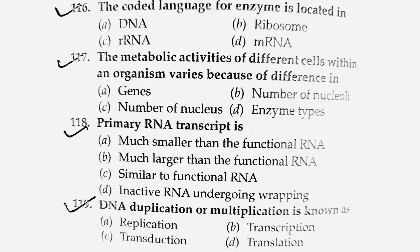Next question: DNA multiplication is known as what? Duplication means copy; in biology, multiplication means division — the parent divides into daughter cells. Replication means complementary copying. The process: DNA makes its own copy through replication. Then transcription is DNA to RNA (mRNA formation), and translation is mRNA to protein synthesis. The answer is replication. Students, comment: what is transduction — give a single line definition.